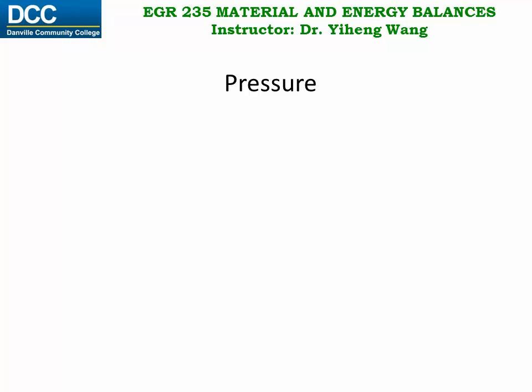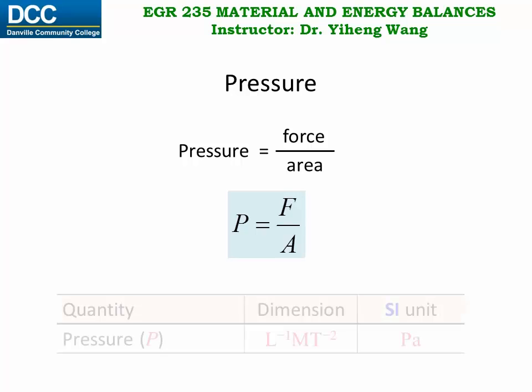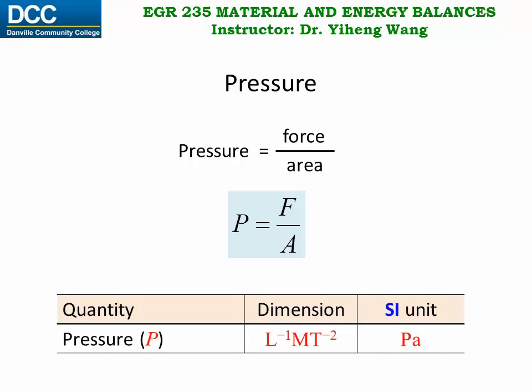We are all very familiar with pressure. We know that it's force over area, F over A. We have worked on its dimension before. Its SI unit is newton per square meter, which is Pascal. In the American engineering unit system, a common unit for pressure is psi, pound force per square inch.